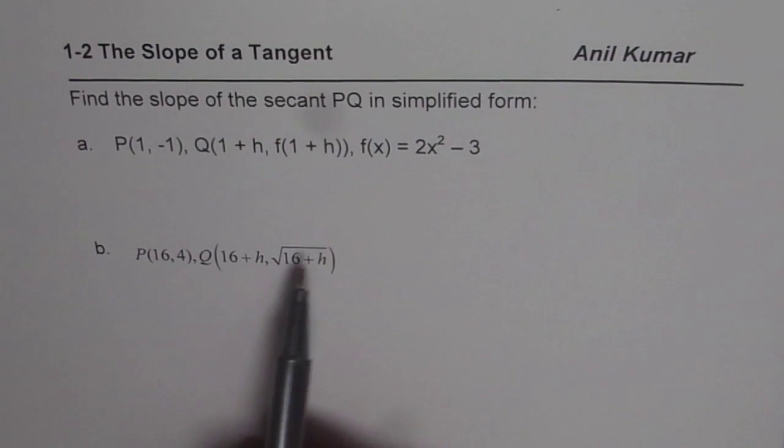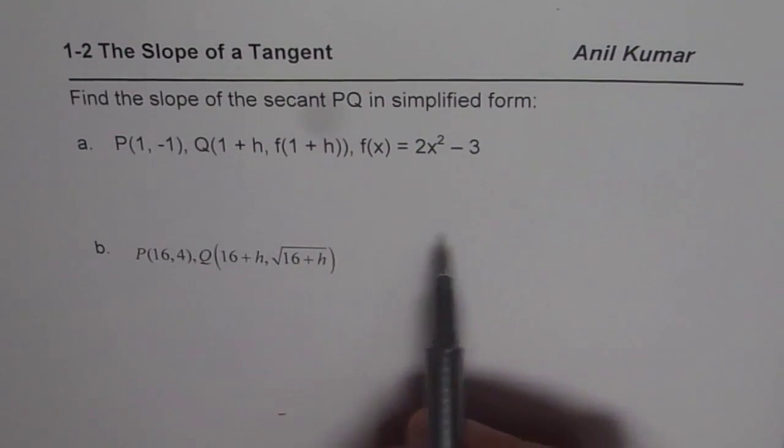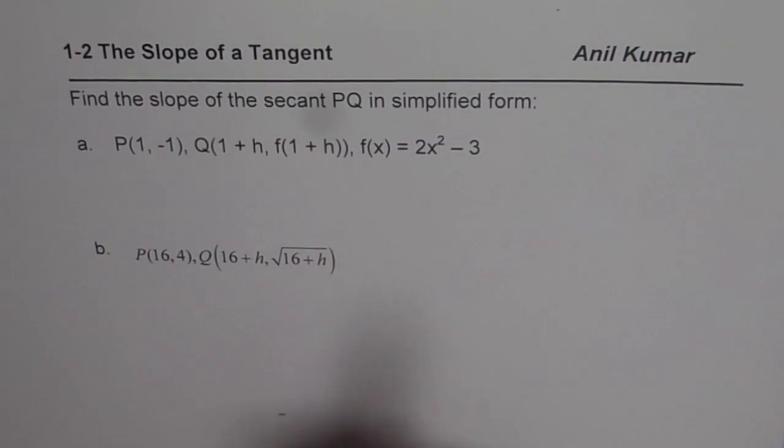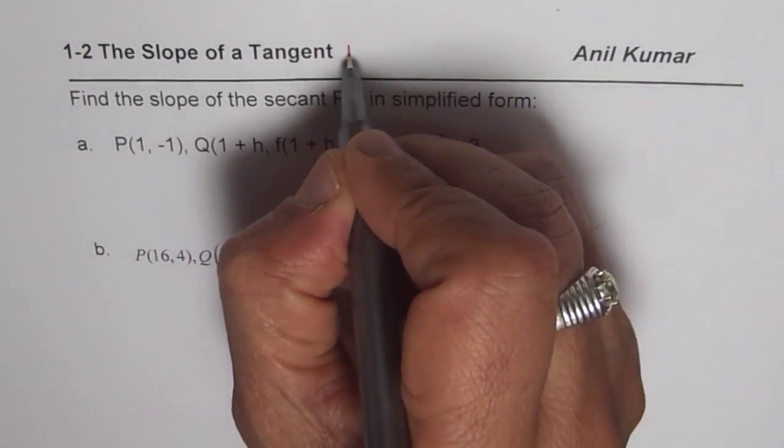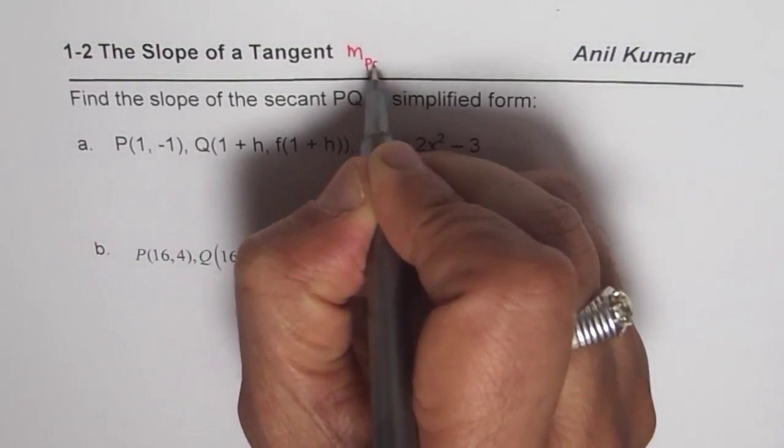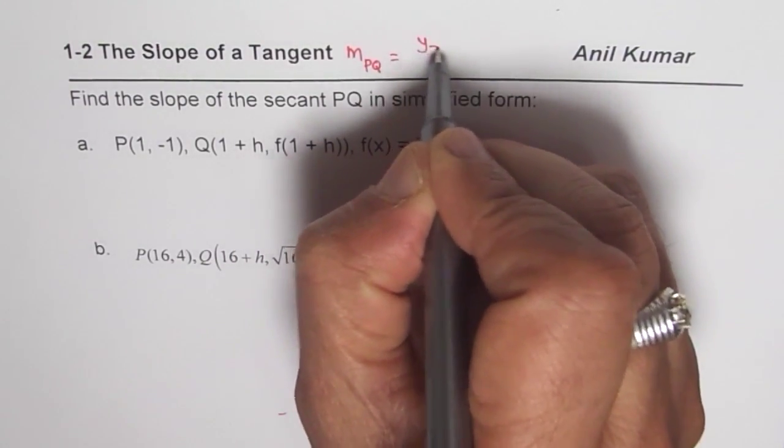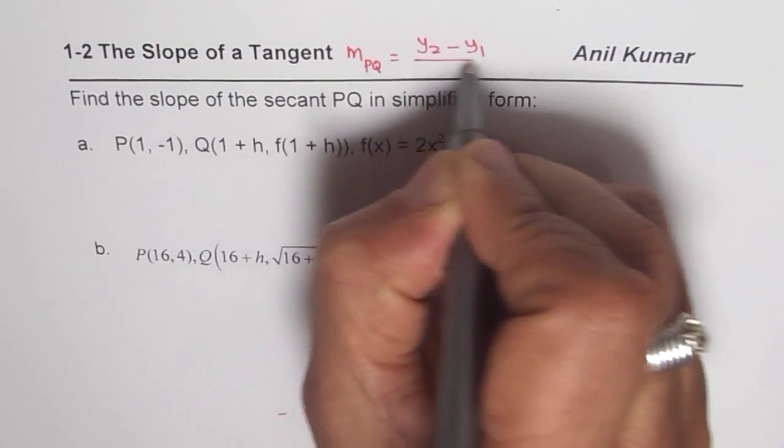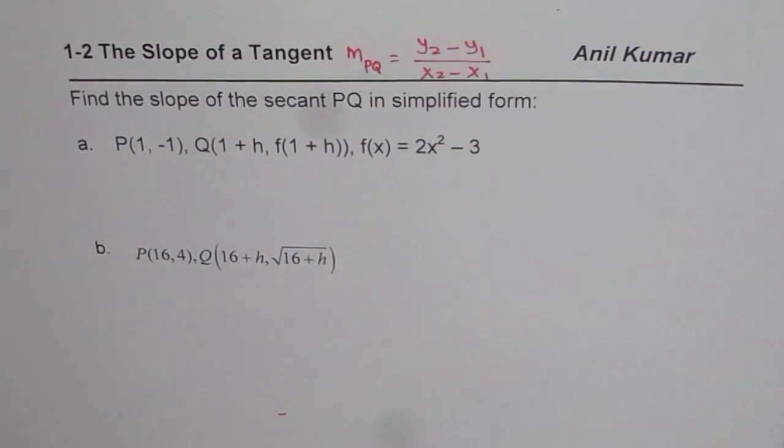You can pause the video and find the secants for these questions. As you know, secant is the slope of the tangent between two points, P and Q. It could be change in y over change of x, that is (y₂-y₁)/(x₂-x₁). So that is the formula which you need to apply and find the answer.